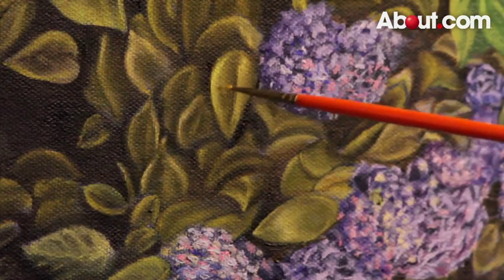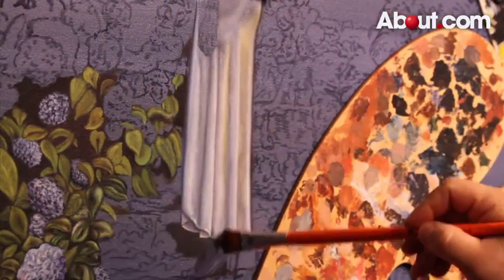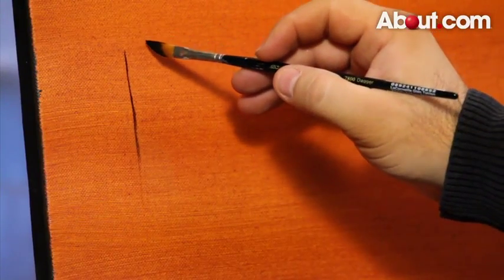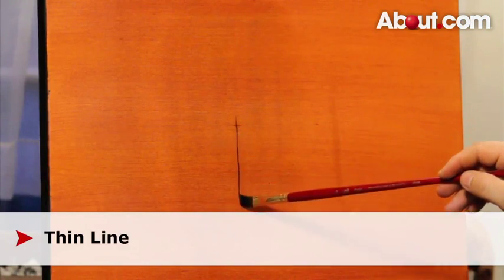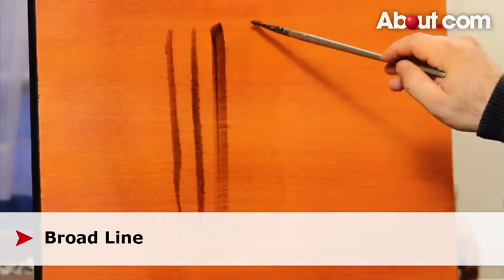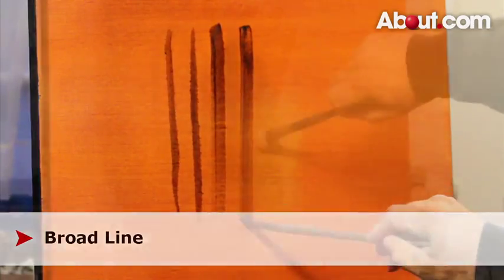Also, experiment with holding the tip of the paintbrush to the canvas in different ways. Depending on the type of brush you're using, you can get a thin, precise line by using it on its side. And you can also get a more broad line by holding it flat against the canvas.